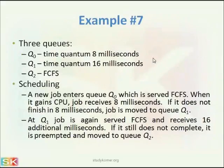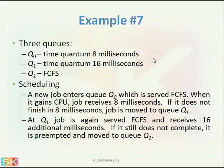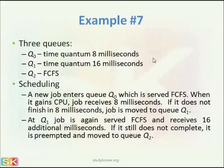Here is an example. Suppose there are three queues: q0, q1, and q2. In q0, a process will be executed for 8 milliseconds. In q1, a process will be executed for 16 milliseconds. In q2, processes will be executed in FCFS manner. Scheduling works as follows: a new job enters q0, which is served FCFS. When it gains CPU, the job receives 8 milliseconds. If it does not finish in 8 milliseconds, the job is moved to q1.